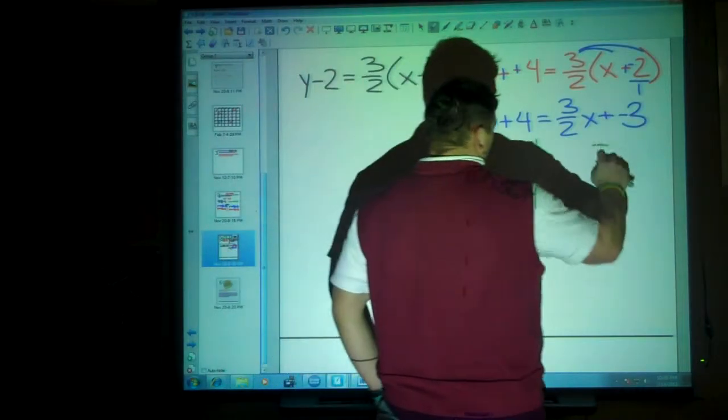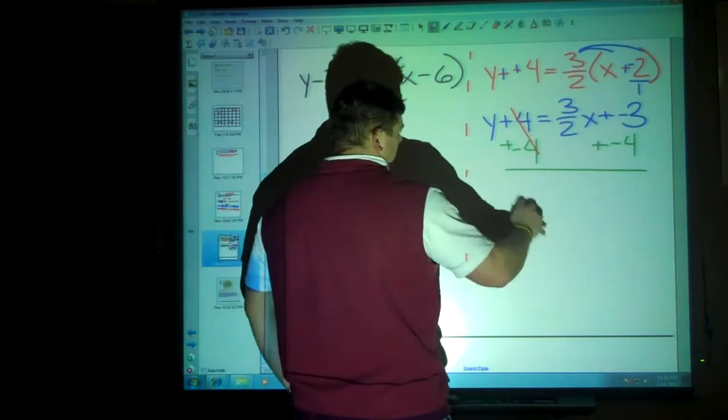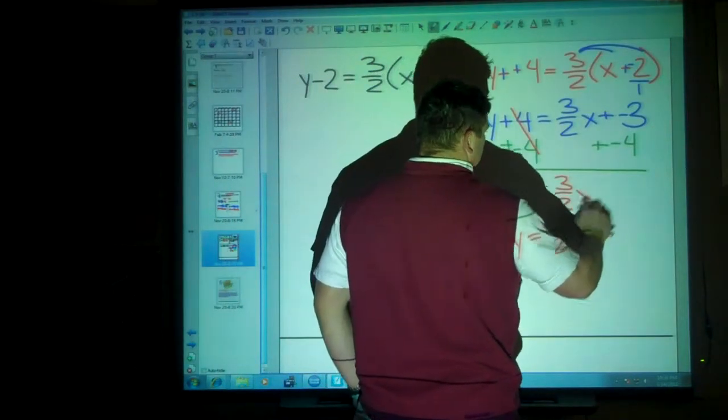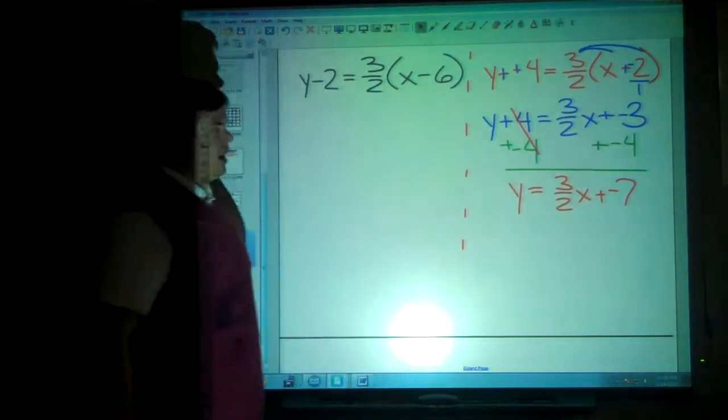Then, add negative 4 to both sides, you get a grand finale of y equals 3 over 2x plus negative 7, because negatives plus negatives are equal to more negatives.